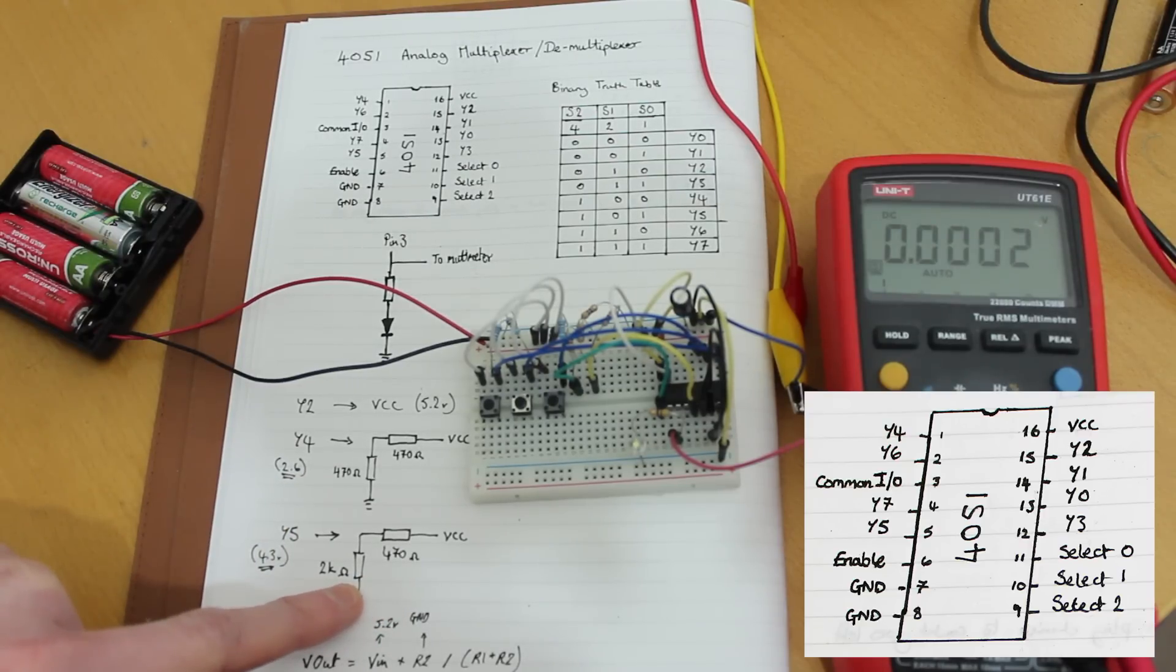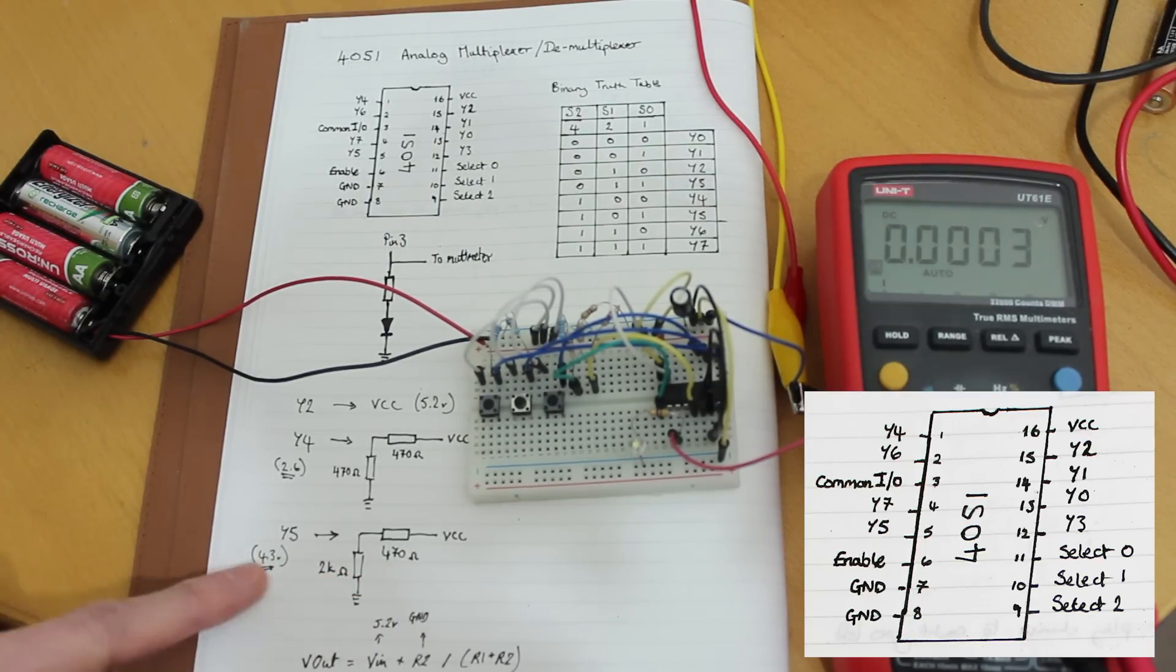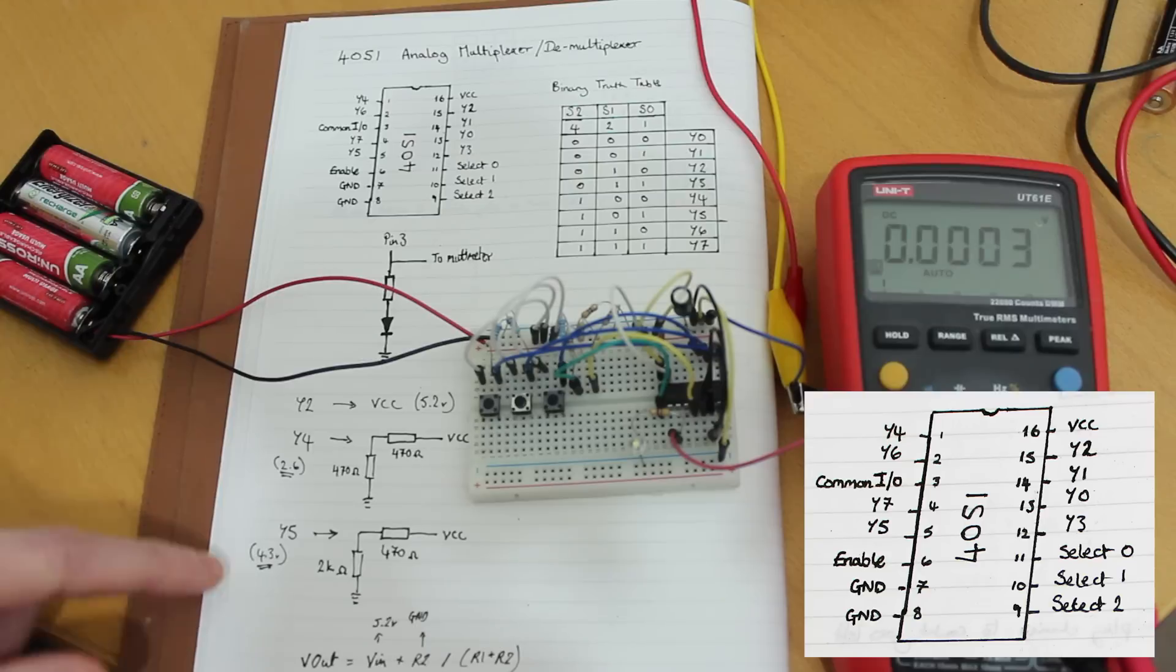And on Y5, which is pin 5 on the left-hand side, we've got a 2K resistor in resistor 2 and 470 in resistor 1. So that's hopefully going to give us about 4.3 volts. Now I've put the calculation down here so you can see it, but it's a general calculation that you can use.